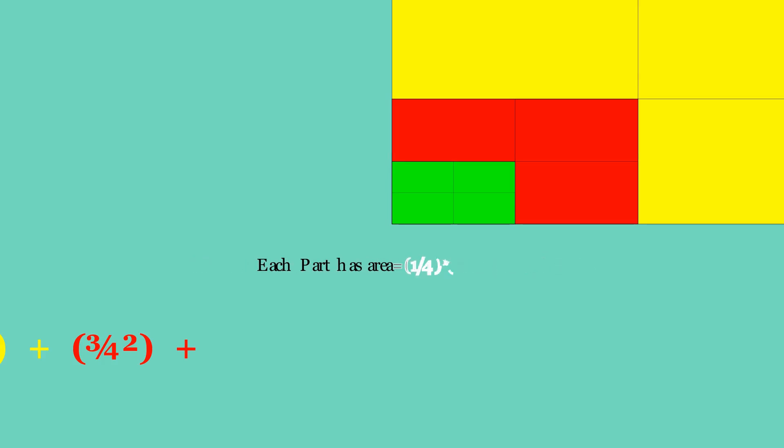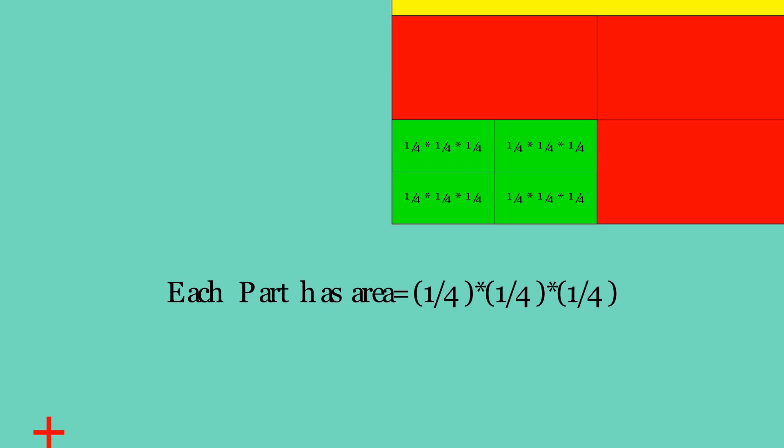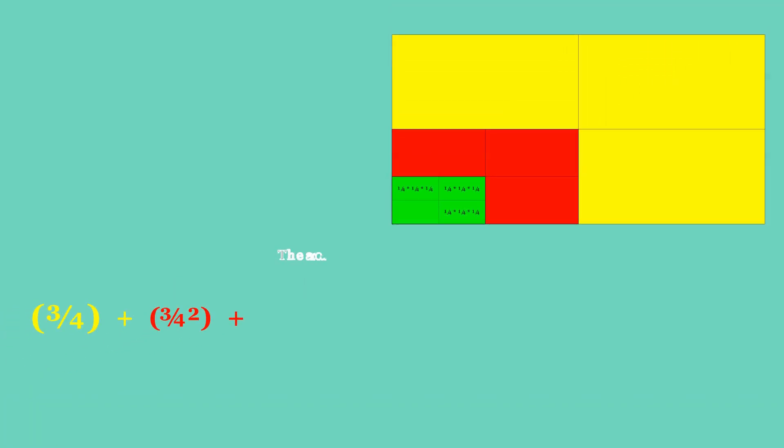The area of each of these mini mini rectangles is one quarter times one quarter times one quarter. Add the area of the first three mini mini rectangles with their sum being equal to three quarters cubed, three by four raised to the power three.